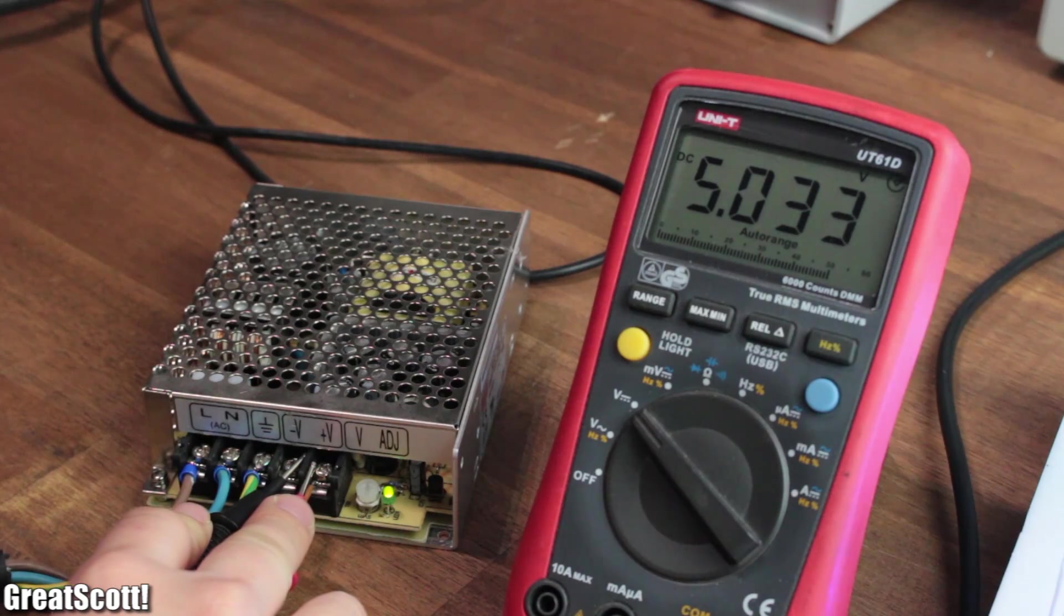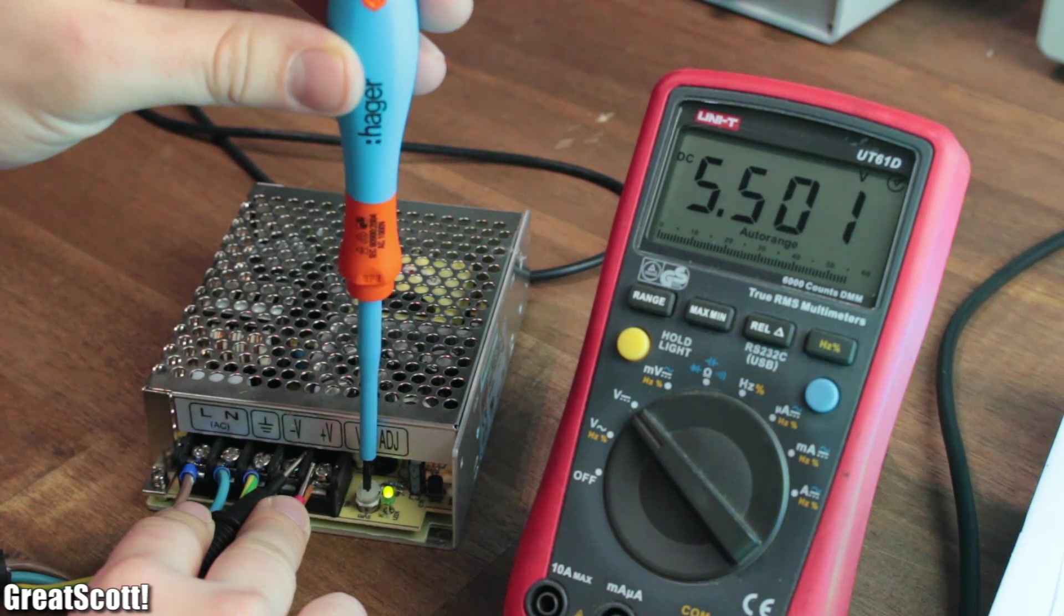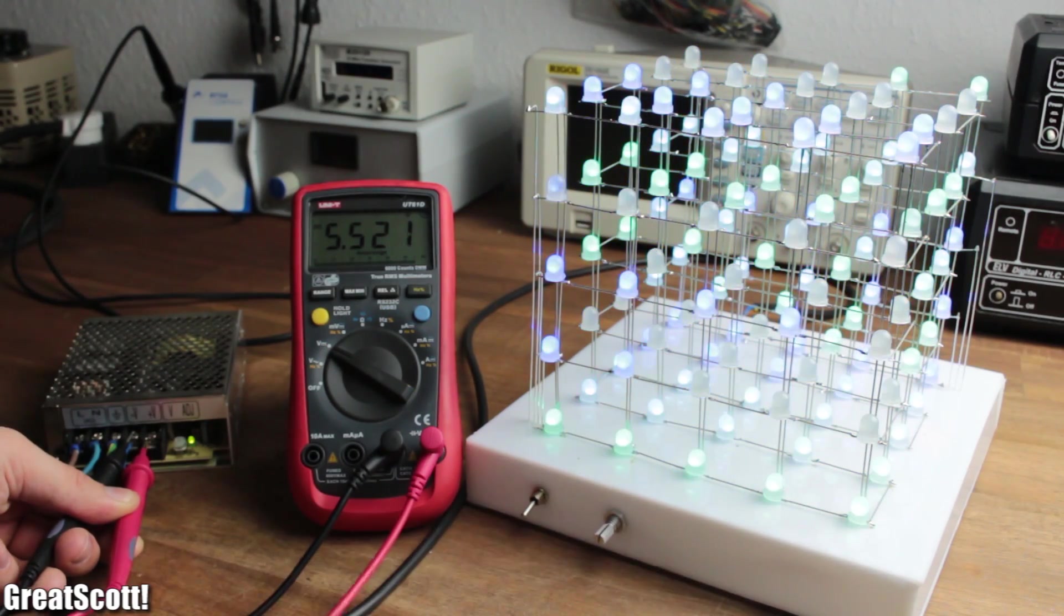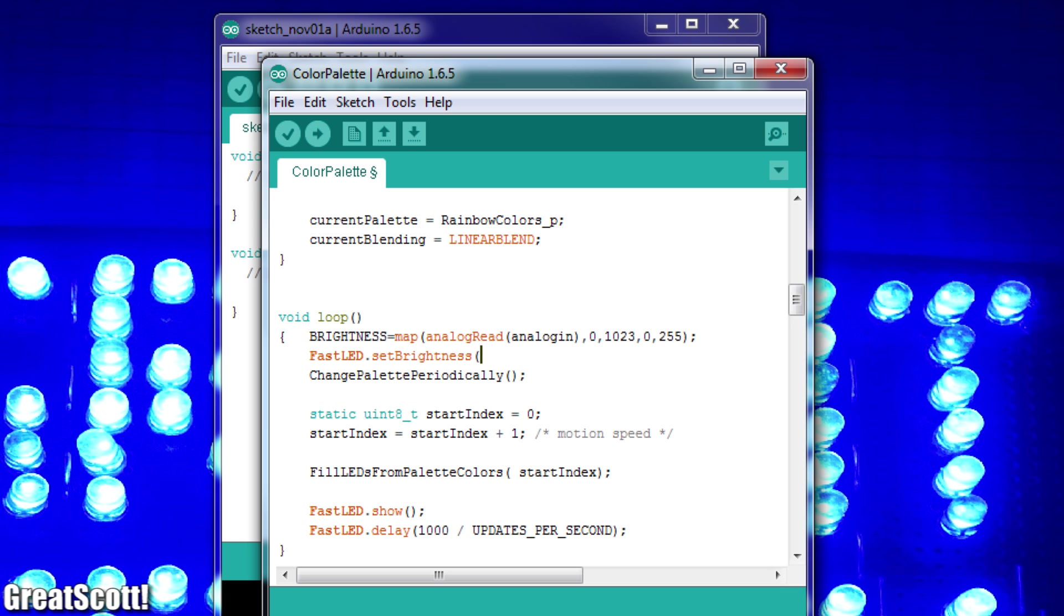One last advice though: the LEDs like to freak out a bit with 5 volts, so make sure you adjust the voltage to around 5.5 volts. With that being said, all there's left to do is opening an example animation and changing the code a bit before finally uploading it.